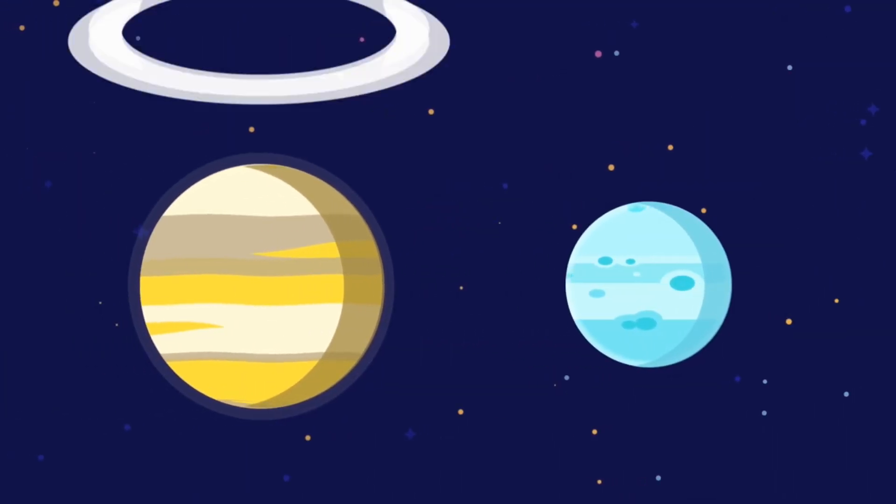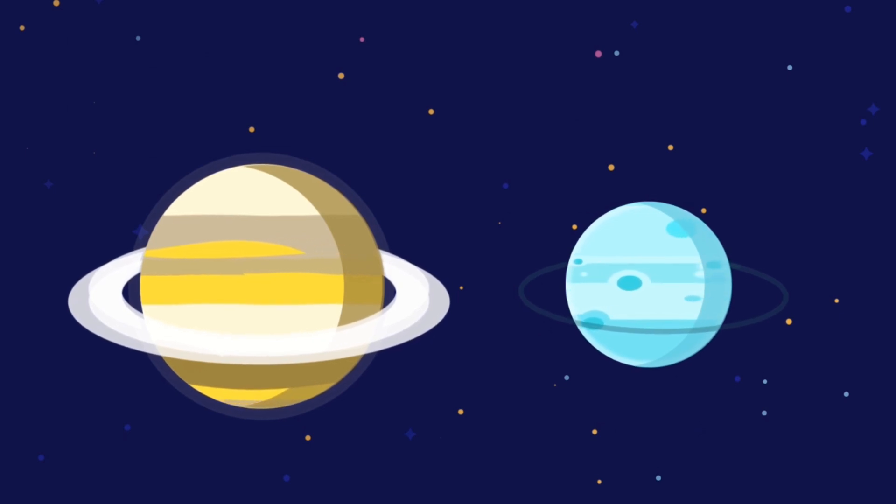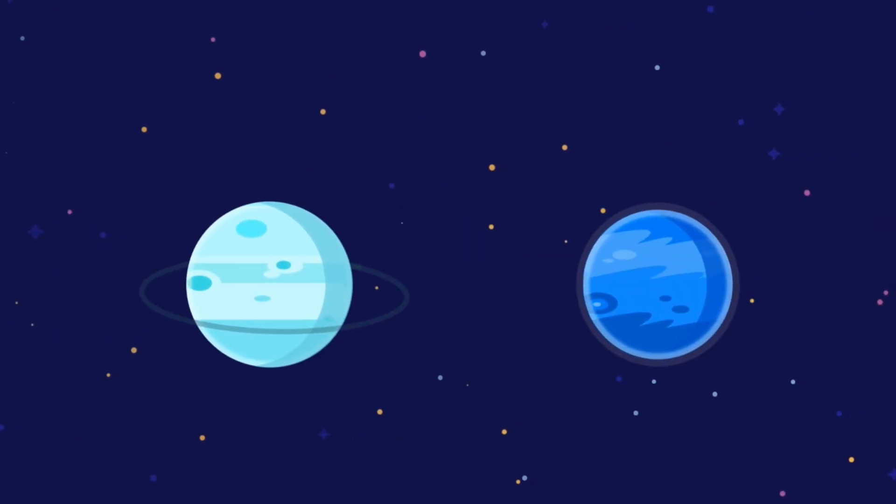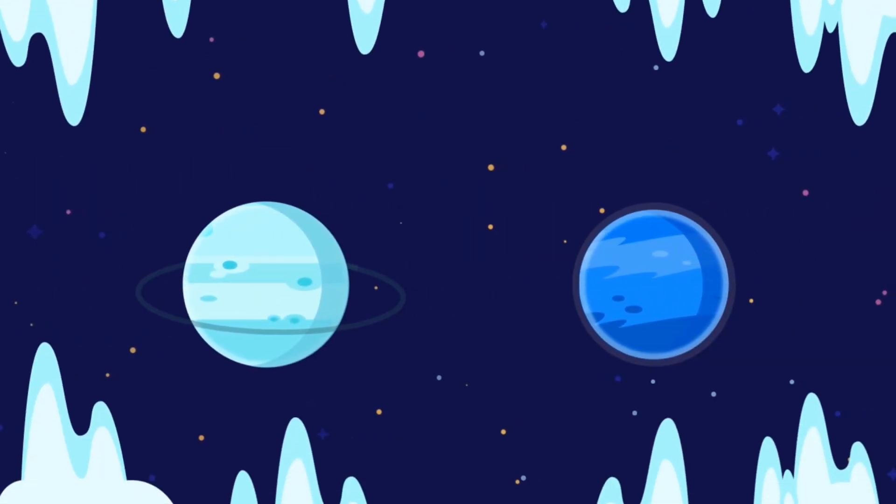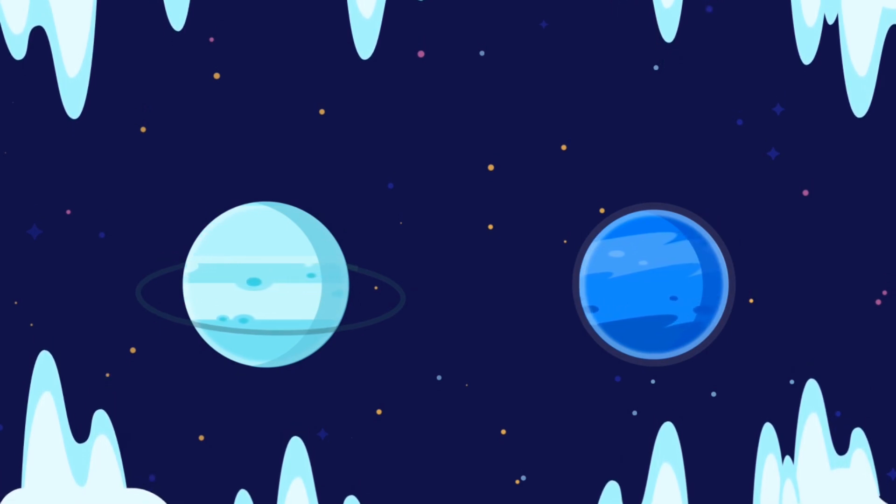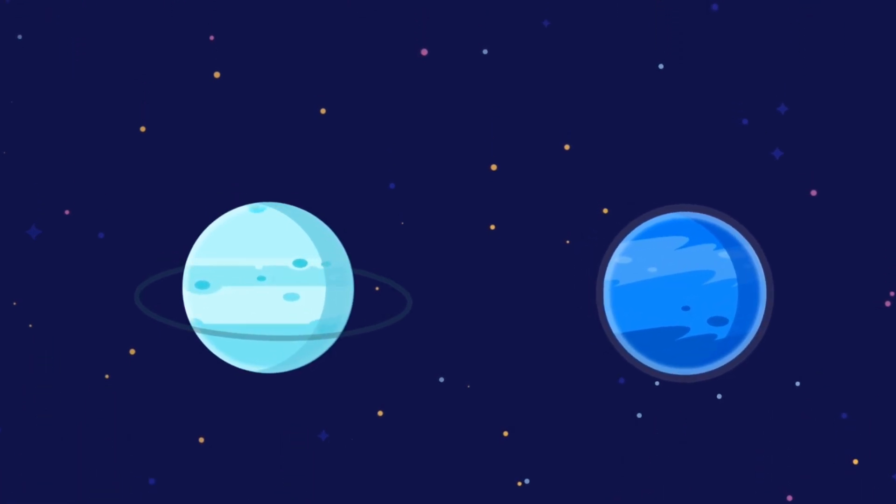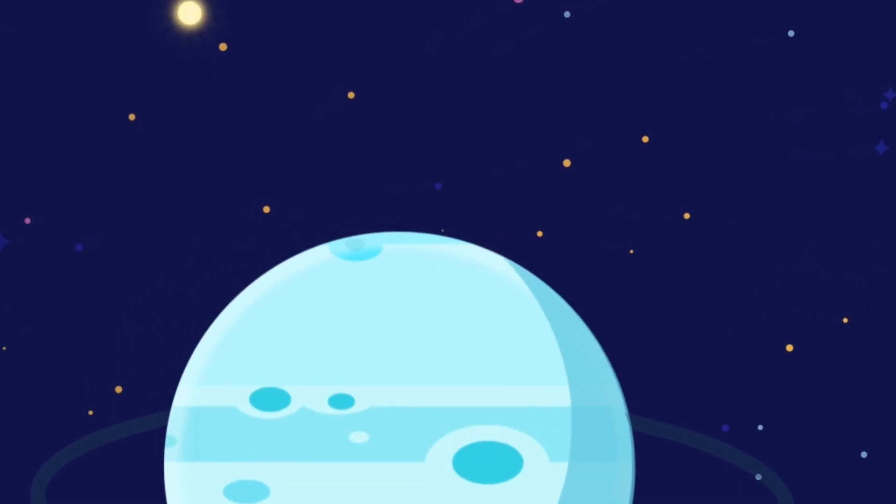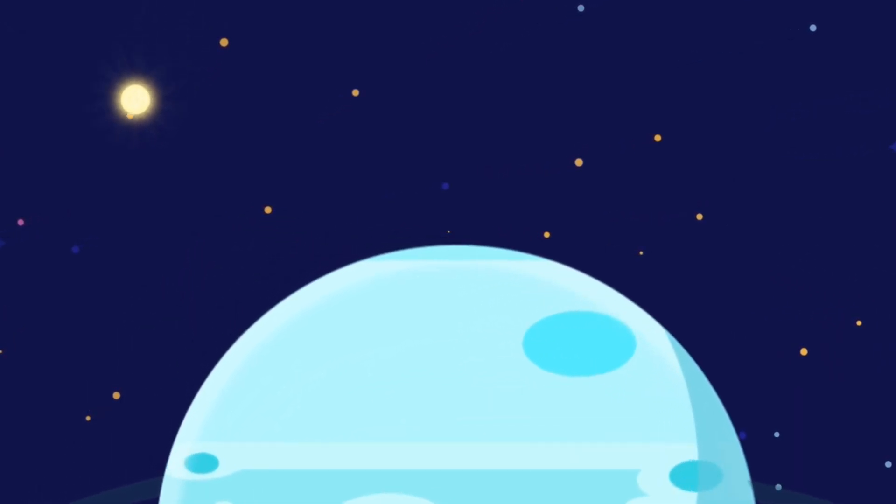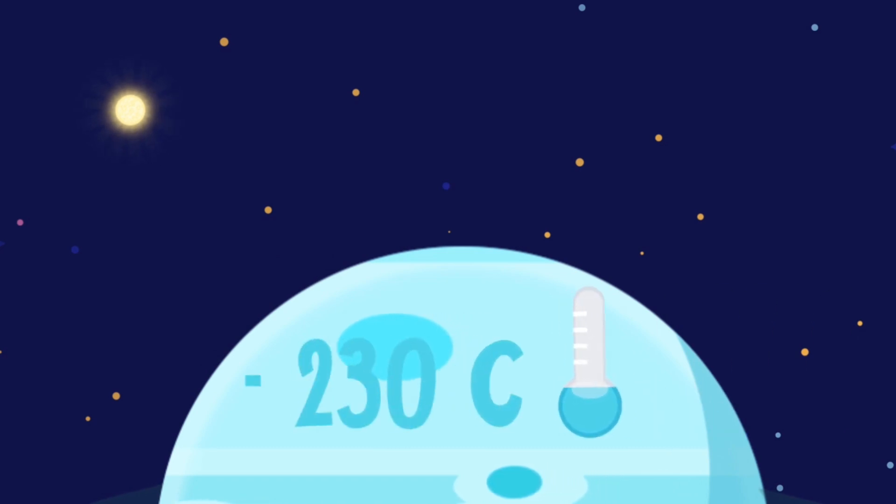Like Saturn, it has rings, but they are dark and do not reflect light. Together with its brother Neptune, Uranus forms a group of so-called ice giants. Because of their distance from the Sun, light and heat that come to the surface are so scarce, that even during the day there is twilight, and it is terribly cold.